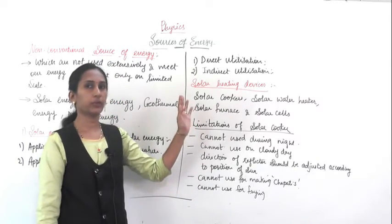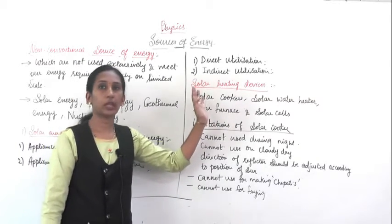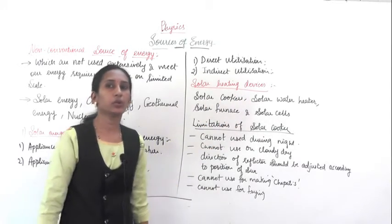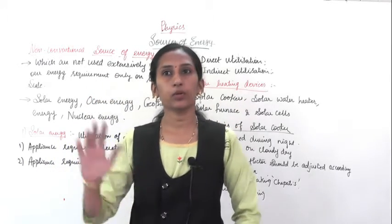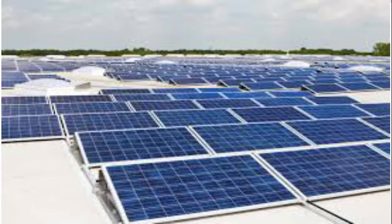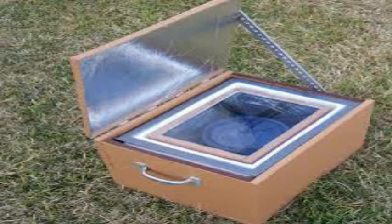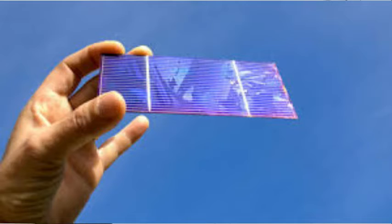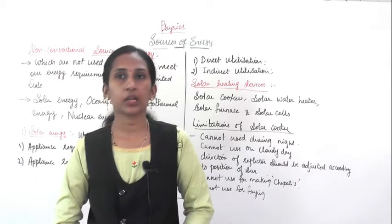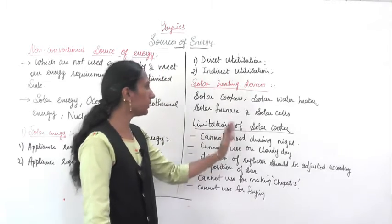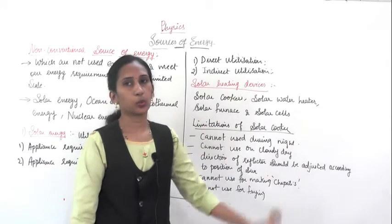Now we are going to study a few solar heating devices. You have seen solar panels above your house or on the terrace. These solar panels are used to heat water. Then there are solar cookers. Then there are big solar furnaces. Solar cells are also there. Like that, many solar heating devices are there. First we are going to study about the solar cookers.